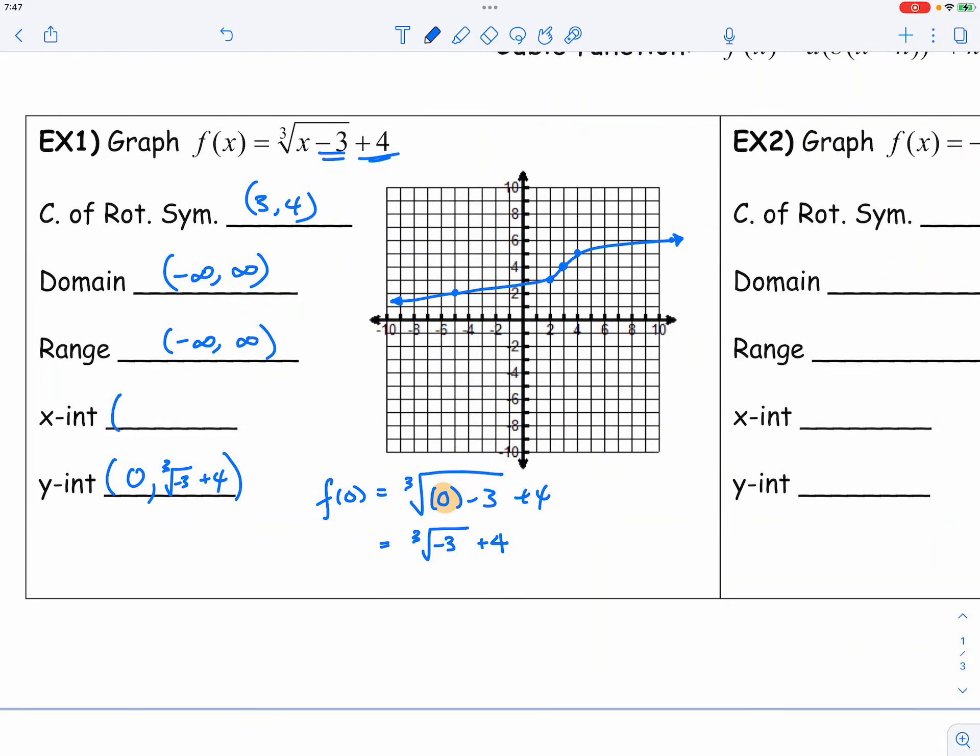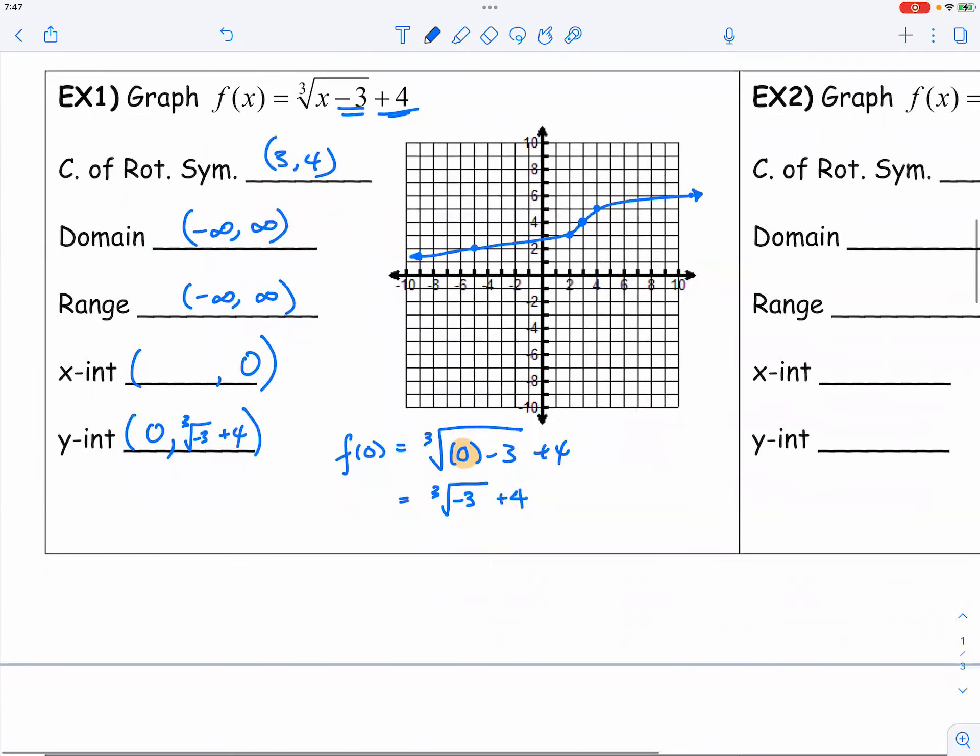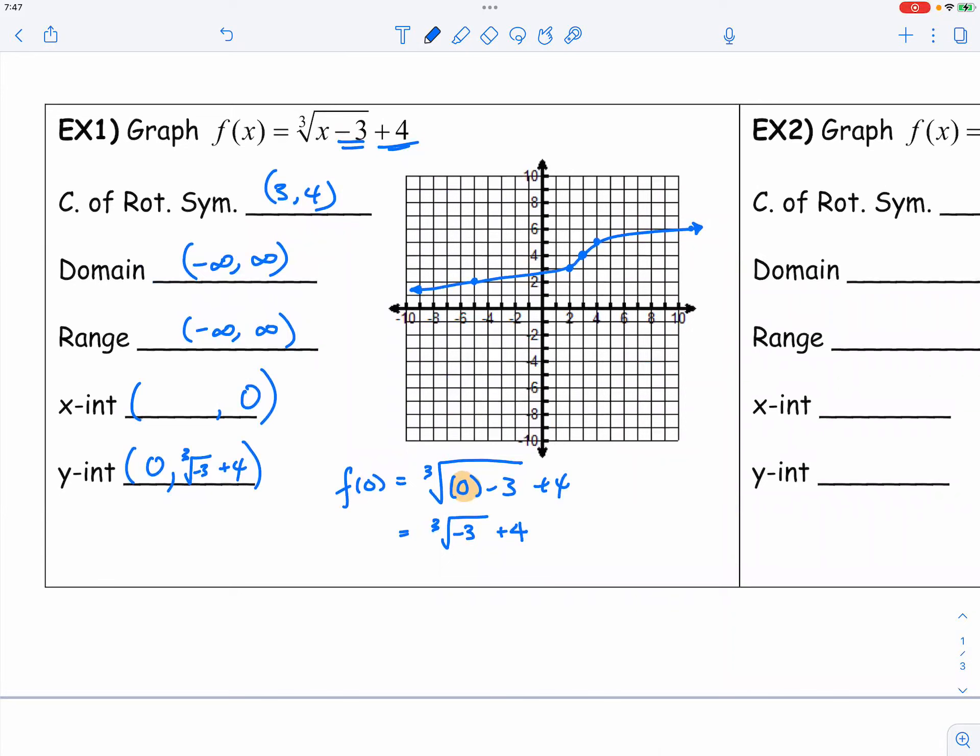And now we switch gear to find out the x-intercept. We know the x-intercept is when the y is equal to 0. But as you can see right here, the x-intercept is somewhere further down to the left-hand side. And we don't even know where it's going to be. So let's go ahead and find out. So for the y-intercept, we go ahead and use the, oh no, x-intercept, sorry. x-intercept would be when the y is equal to 0. This is to find out the x-intercept. It's y is equal to 0.